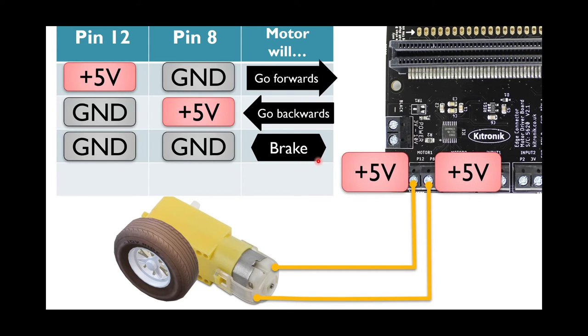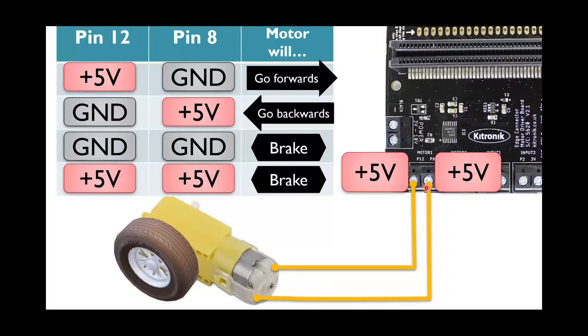For a trick question, what if they are both at 5 volts? Well, now they're both at the same level. It won't flow from one to the other because they're at the same voltage. So it will also brake.